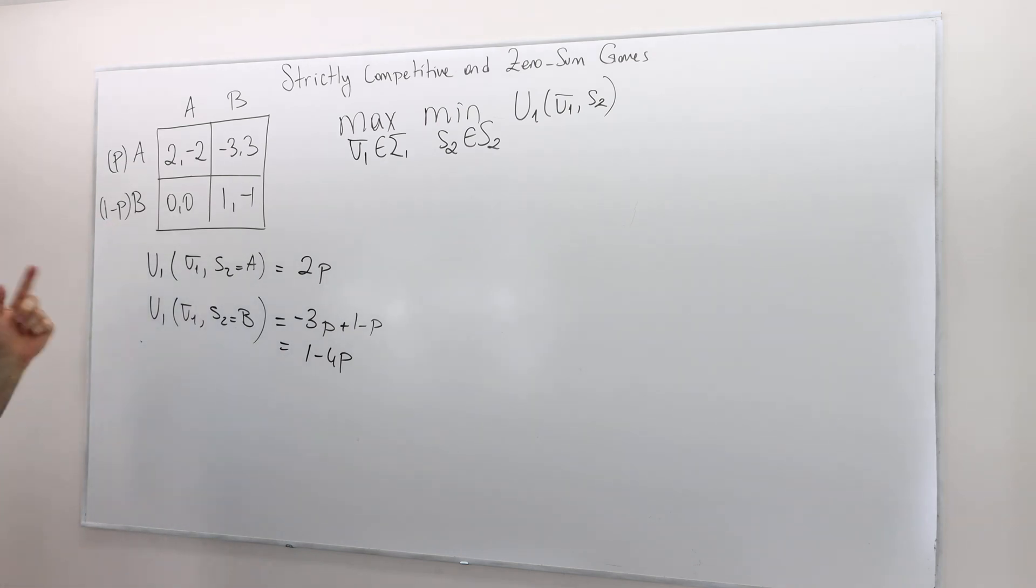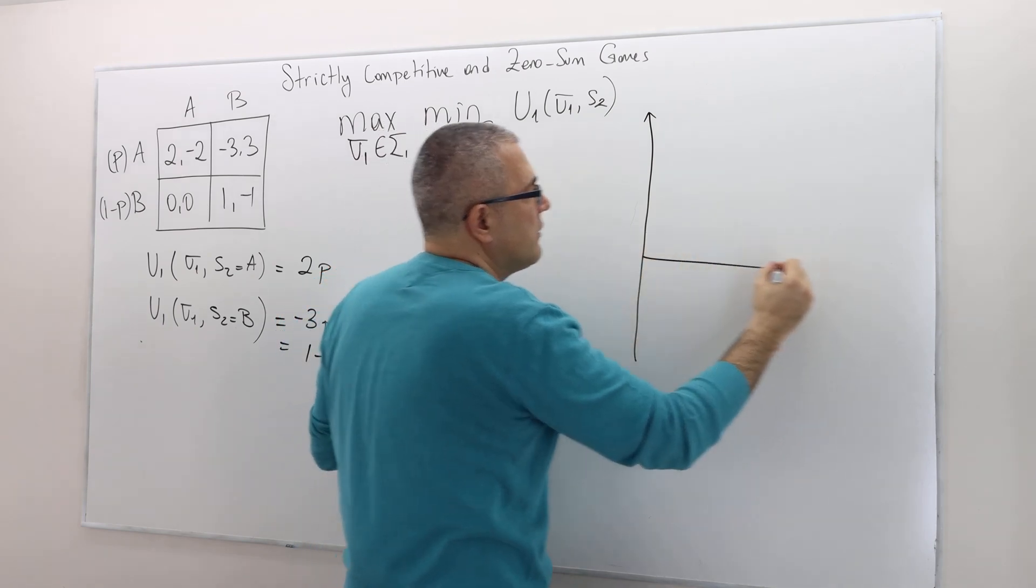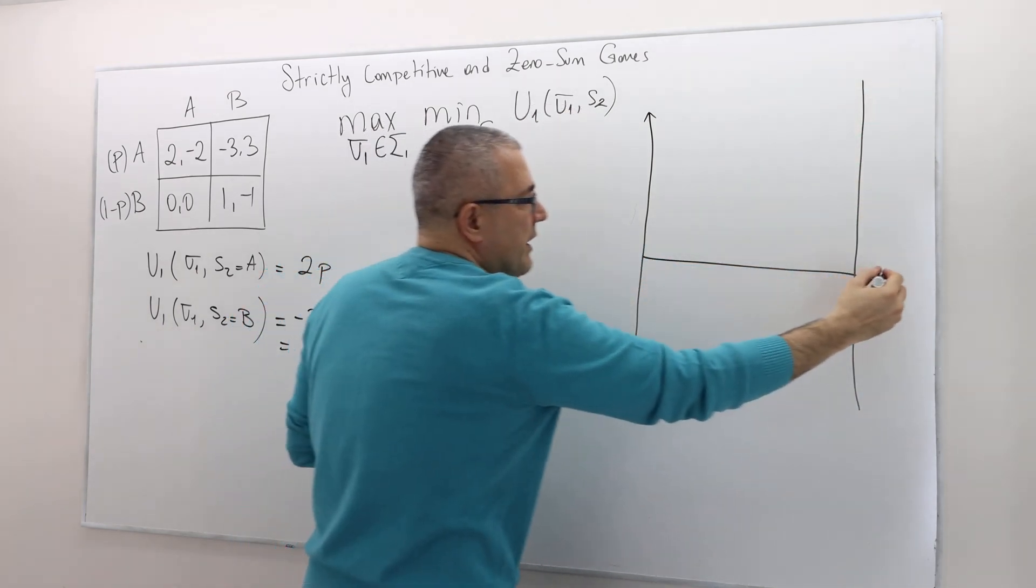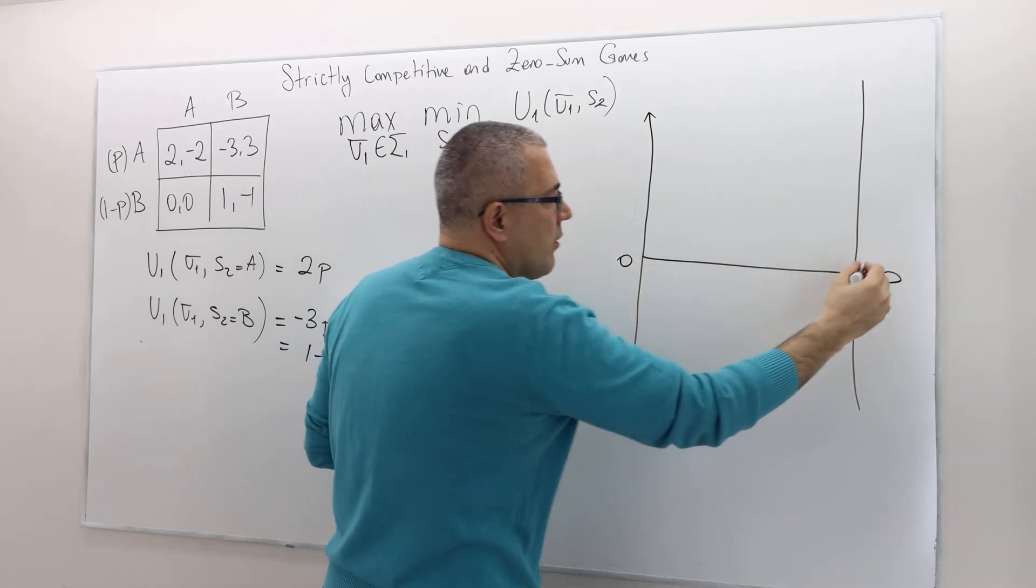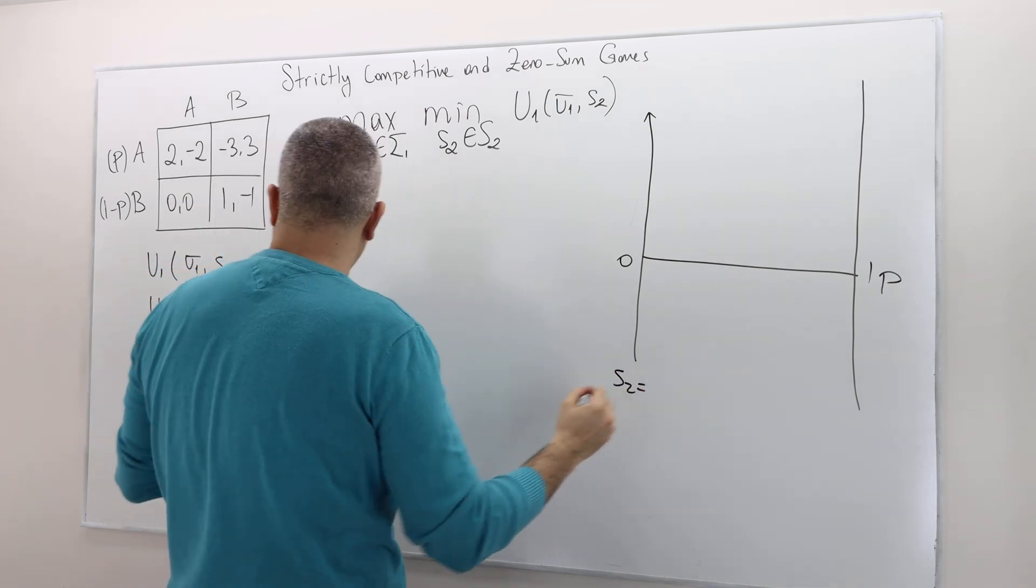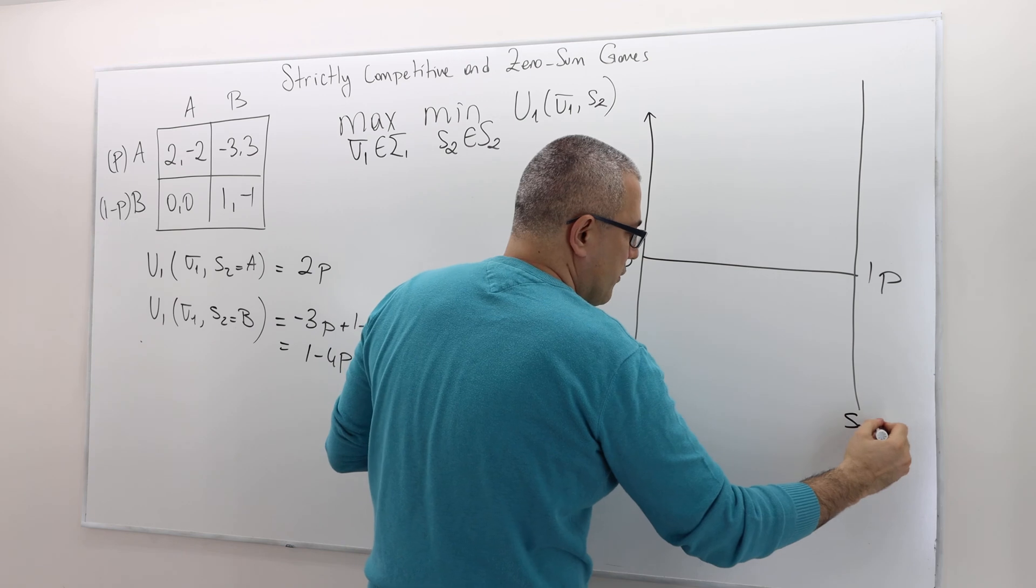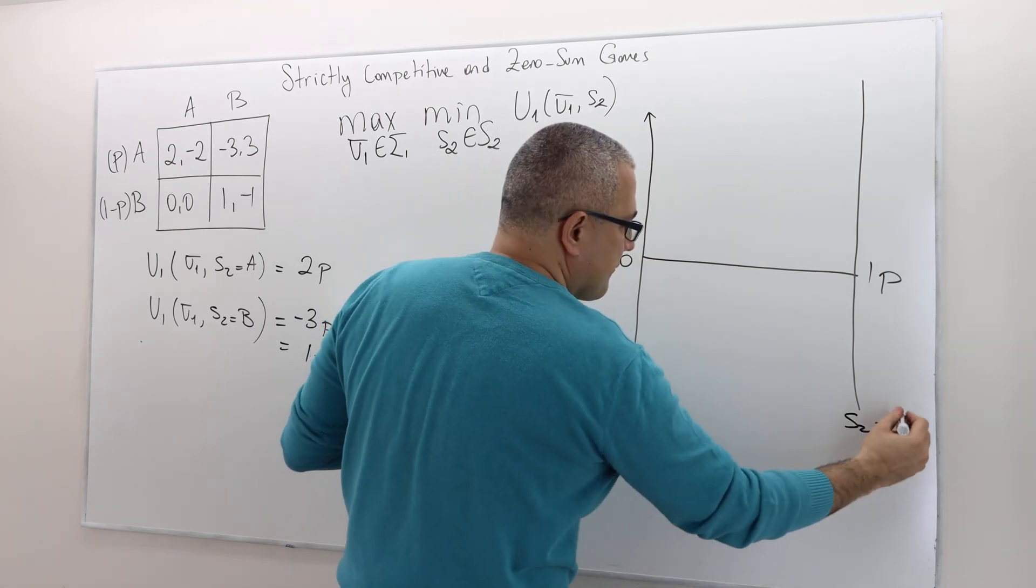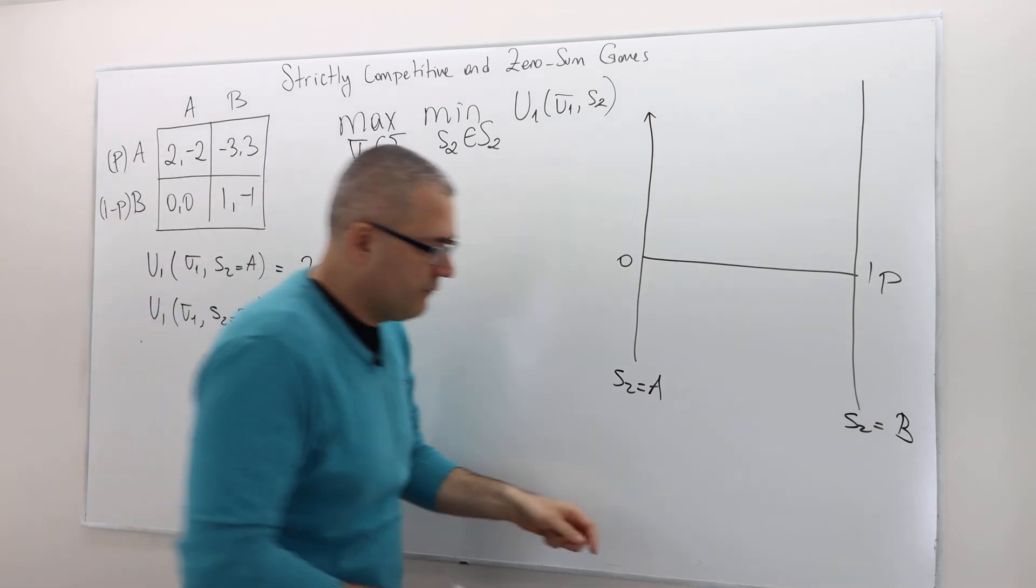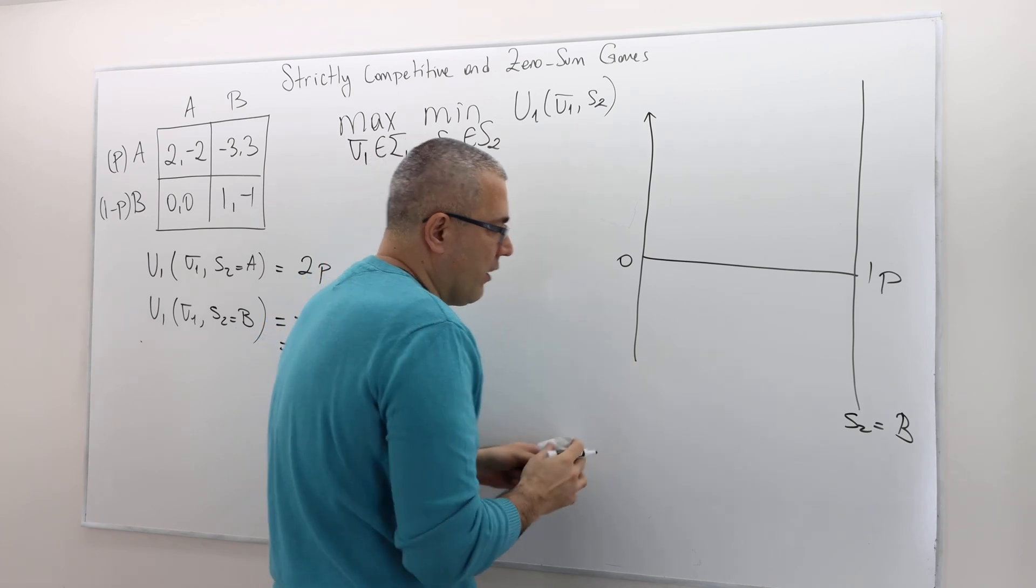Okay, so that's it. I'm going to graph this. How? Well, you'll see. So here, this is the p value. It can be zero or it can be one at most. So here when s2 is equal to A, and here s2 is equal to B. Well, I'm sorry, I don't know what I'm talking about. This is the payoff, all right?